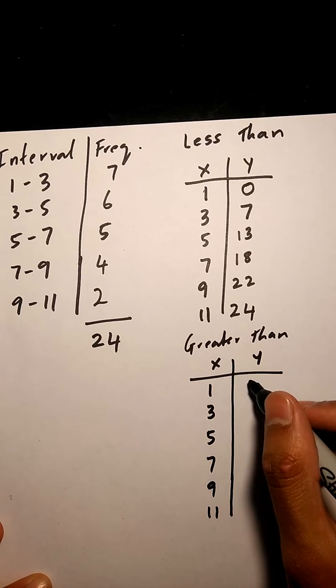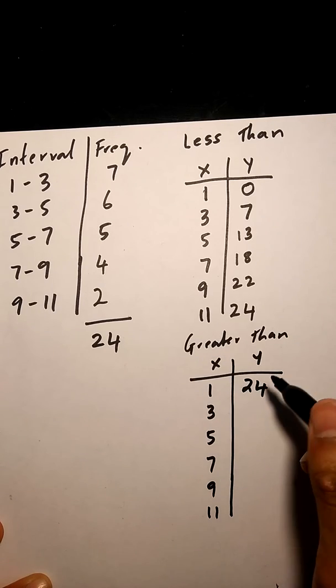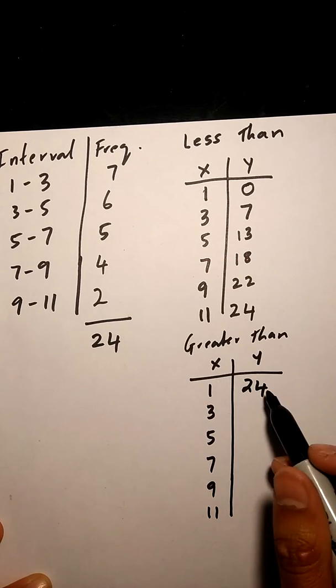Our y values always start at our total or maximum, so 24. And we are subtracting each value from our frequency table.